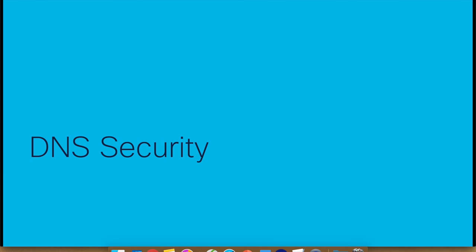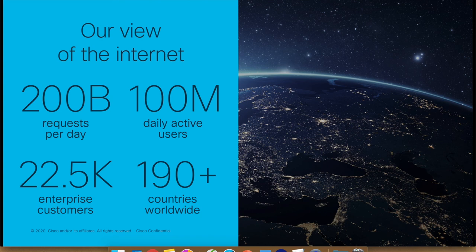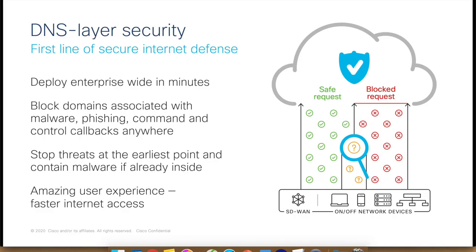DNS security is what made Umbrella what it is today. The numbers are staggering: 200 billion DNS requests per day, 100 million active users, over 22,000 companies using it, present in virtually every country in the world. Because it started as a free service, Umbrella was able to accumulate enormous data to feed into machine learning and AI engines, making its predictability far superior — blocking domains associated with malware, phishing, and command and control. You can stop threats before they even penetrate your organization by killing them at the DNS level.